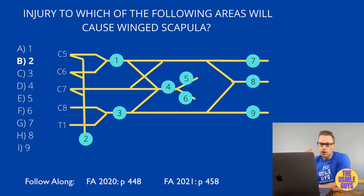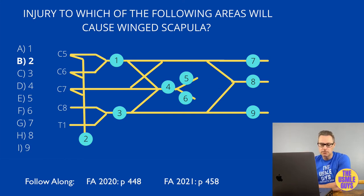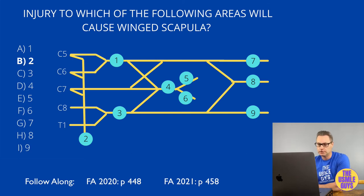The muscle that becomes defective and leads to winging of the scapula is the serratus anterior. When injured, we can't properly anchor the scapula to the thoracic cage, leading to an inability to abduct the arm above horizontal positions.